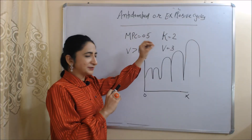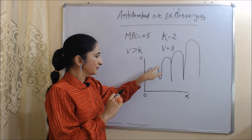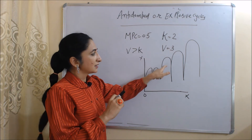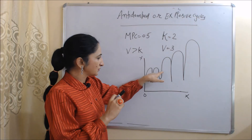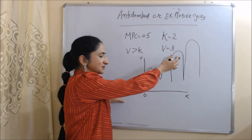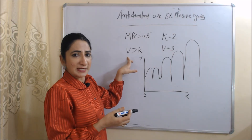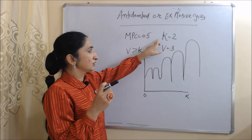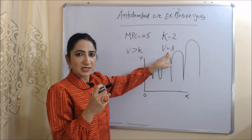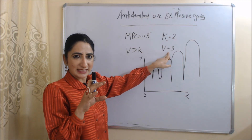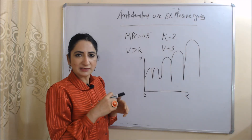Now we talk about the anti-damped, or explosive, cycles. In this case, the economy initially produces smaller cycles, but they slowly become bigger. This happens because the accelerator is greater than the multiplier and works at greater force. Here the multiplier is equal to 2 but the accelerator is equal to 3. So, since the accelerator is greater than the multiplier, the economy initially produces smaller cycles that slowly grow bigger.